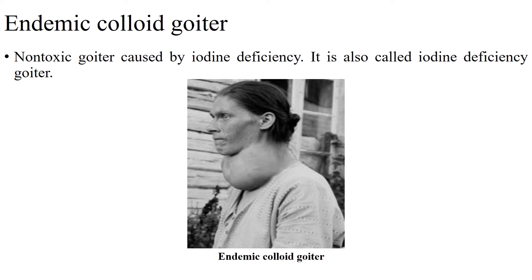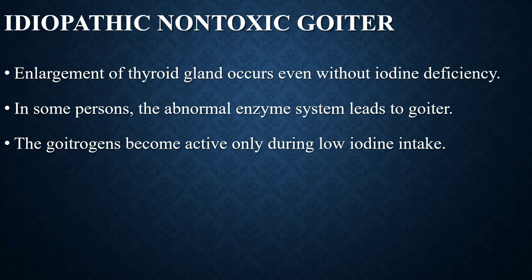Endemic colloid goiter is the non-toxic goiter caused by iodine deficiency, also called iodine deficiency goiter. Iodine deficiency occurs when intake is less than 50 micrograms per day. Because of lack of iodine, there is no formation of hormones. In certain areas of the world, especially the Swiss Alps, the Great Lakes region of the United States, and in India particularly in the Kashmir Valley, the soil does not contain enough iodine; therefore the foodstuffs also do not contain iodine. The endemic colloid goiter was very common in these parts of the world before the introduction of iodized salt.